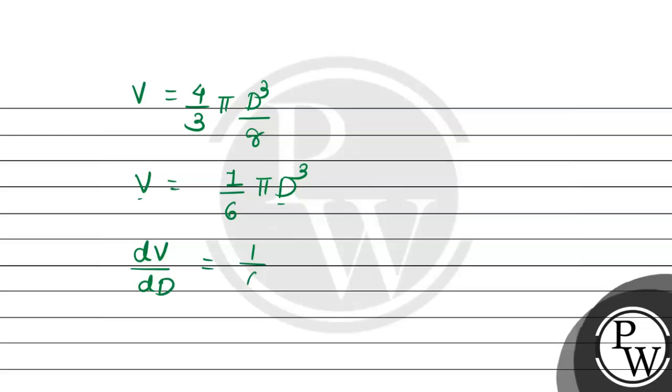In derivation, we know that constants come out. So 1/6 π comes out, and we have d/dD (D³). This means we take the derivative of D³ with respect to diameter.